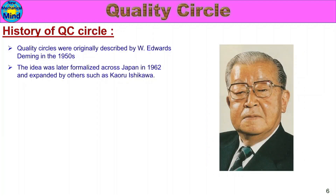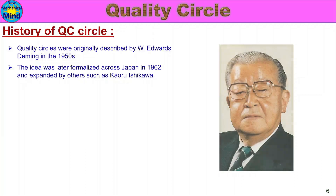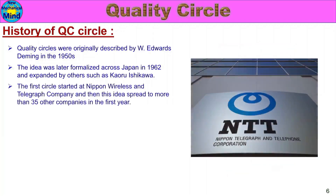The idea was later formalized across Japan in 1962 and expanded by others such as Kaoru Ishikawa. The first Quality Circle started at Nippon Wireless and Telegraph Company, and then this idea spread to more than 35 other companies in the first year.